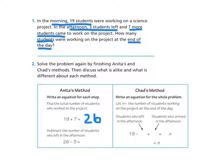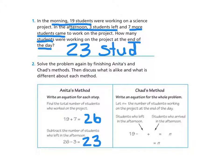Remember, boys and girls, this is a two-step problem because in the word problem it said 3 students left. Since someone left, that means I have to take away. So then what Anita did was subtract the number of students who left: 26 minus 3 equals 23. So we know at the end of the day there were 23 students. And remember, when working on word problems, you need to make sure you have a label.